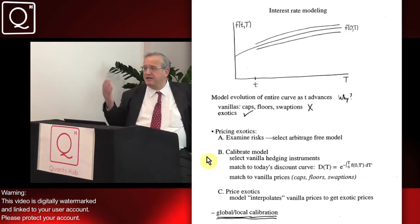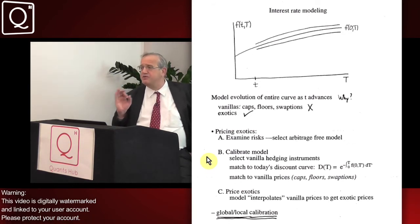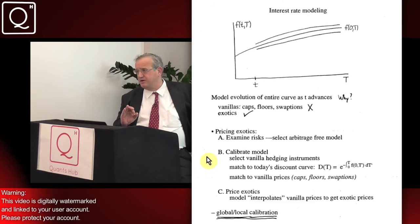Typically, you select a set of vanilla instruments - these are swaptions, caps and floors - instruments that you know second by second throughout the day what their prices are.